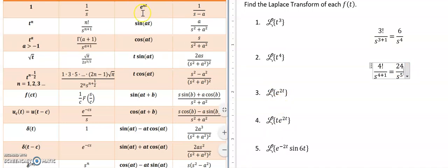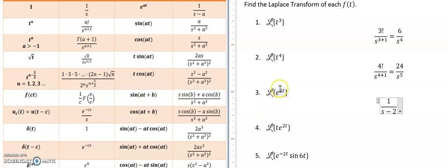E to the 2t, we're going to use the e to the at formula, and here a is 2, and so we're going to get 1 over s minus 2. Now, notice that if this is negative, and this was e to the negative 2, then a would be negative 2, and so s minus negative 2 would be s plus 2, so we're always going to be switching this sign.